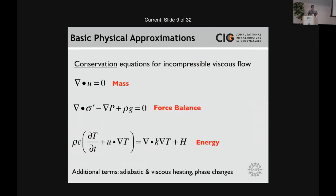For the basic physical approximations, you start with the conservation equations. Here I'm assuming we're starting with the viscous approximations — a number of codes start from an elastic-plastic perspective, but the majority do this from the viscous perspective. The way I've written them down is for incompressible viscous flow — the Boussinesq approximation. If you want to move towards the compressible formulation, you need to include terms like adiabatic and viscous heating and phase changes.